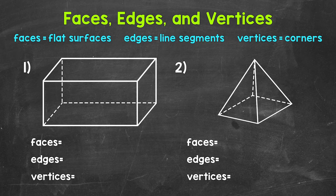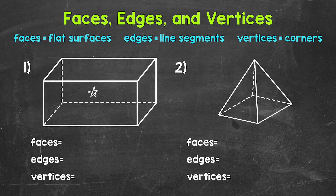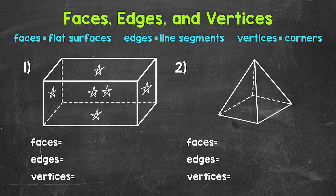Let's take a look at number one, where we have a rectangular prism. Let's start by identifying and counting all of the faces — those are the flat surfaces that make up this rectangular prism. We start with the face up front: one. Then there's a face in the back: two. Then a face up top: three. And then the bottom: four. Then a face to the left: five. And then one to the right: six. So six total faces.